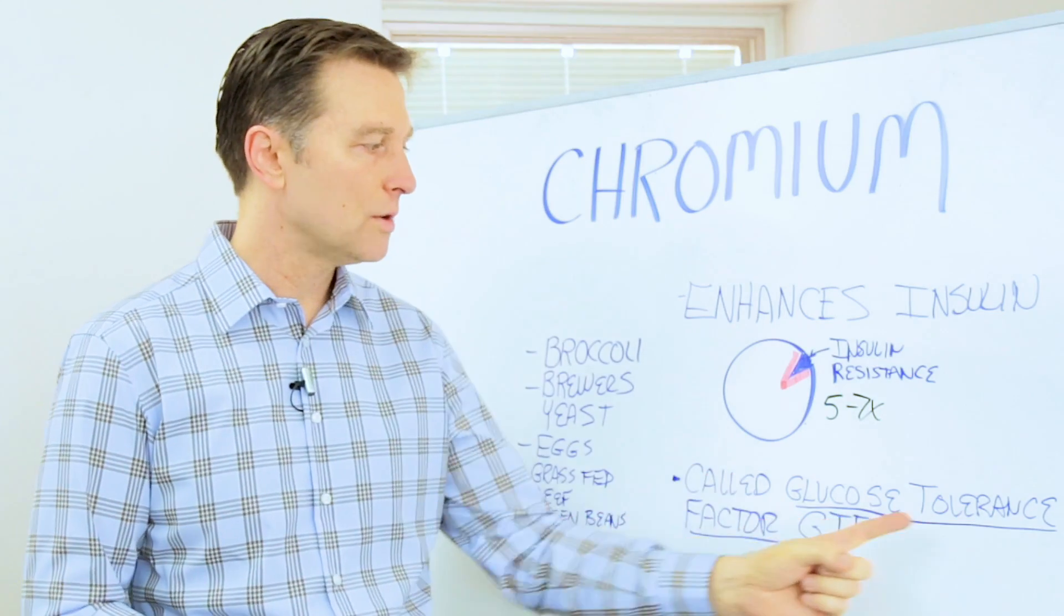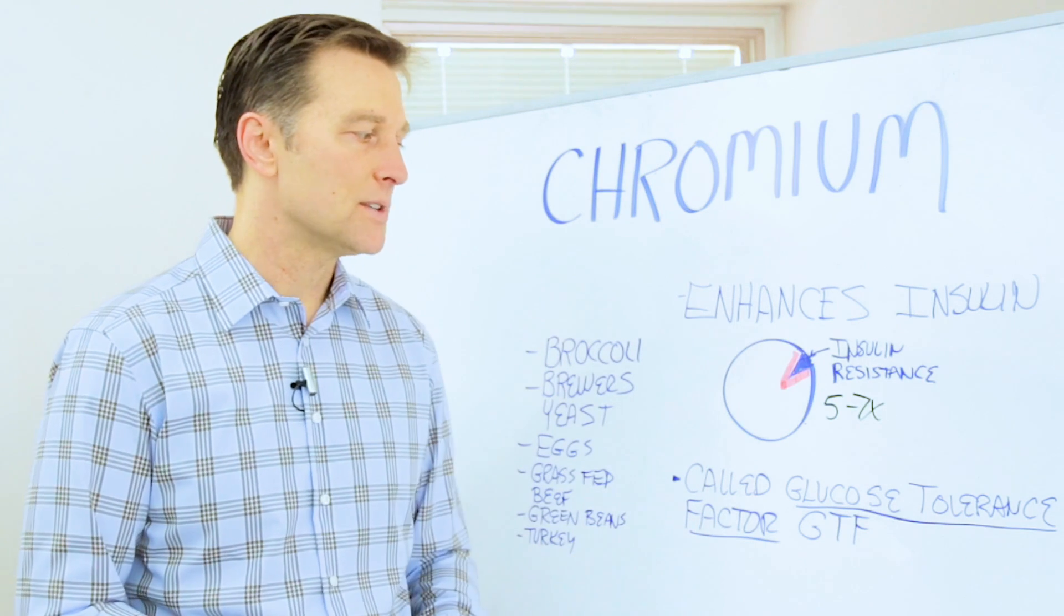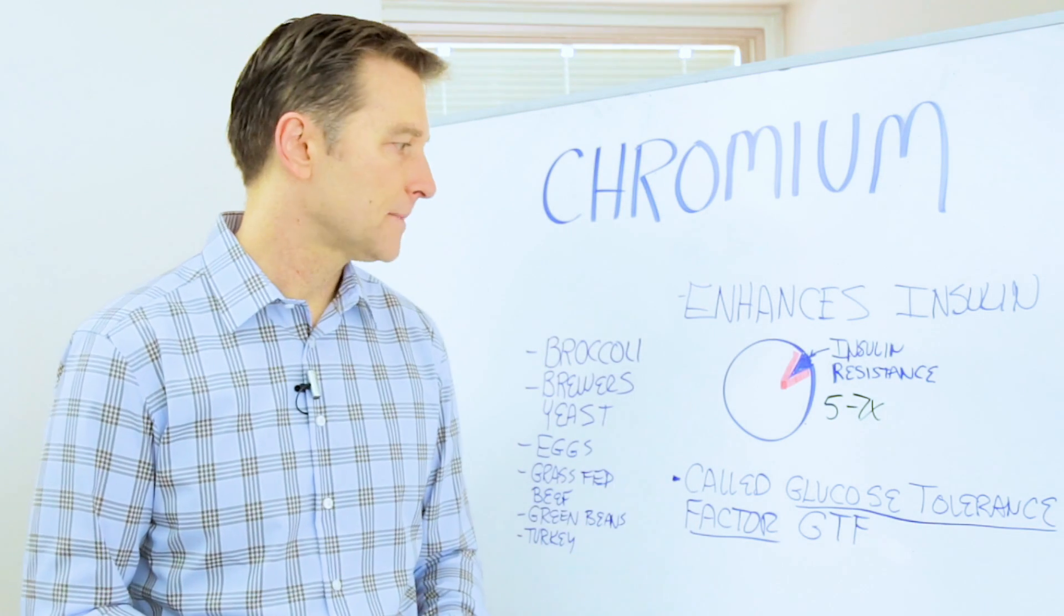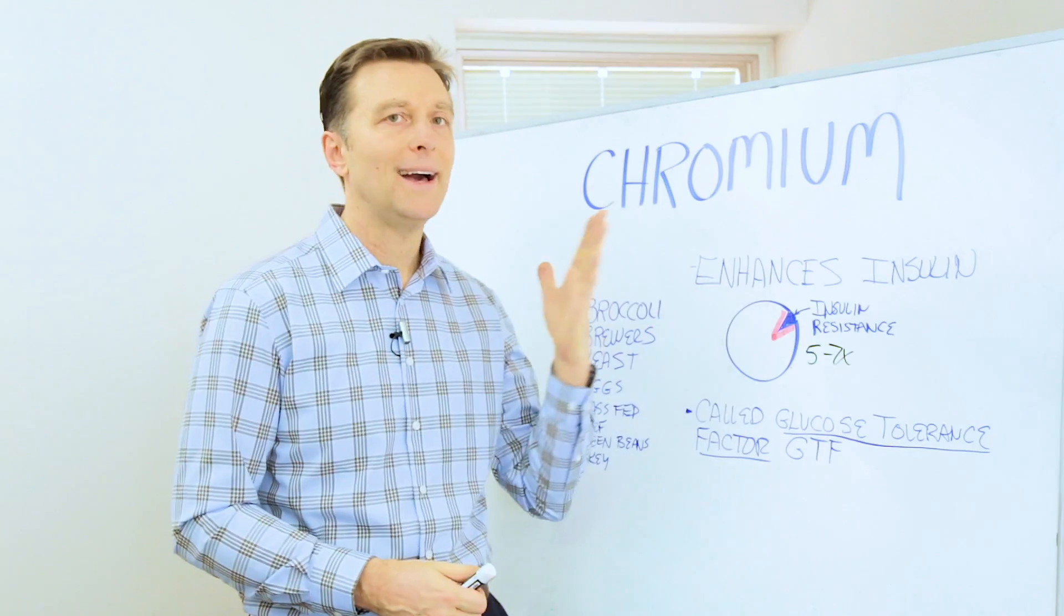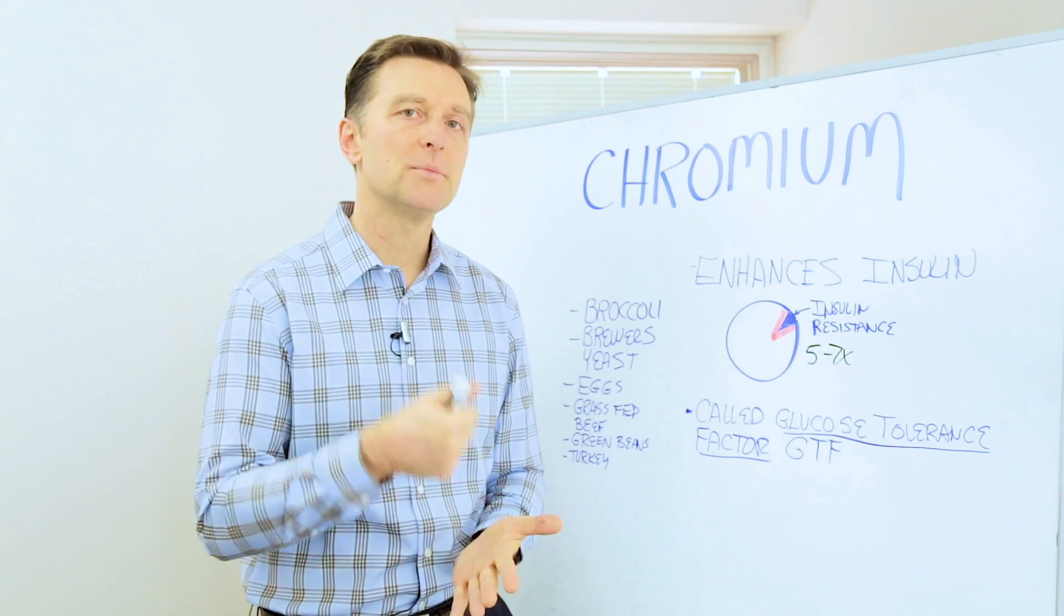It's actually called the glucose tolerance factor because it improves the tolerance of glucose. Some people have a glucose sensitivity. Well, chromium helps that. Basically, chromium helps your blood sugars.